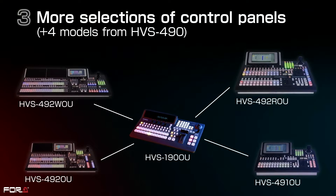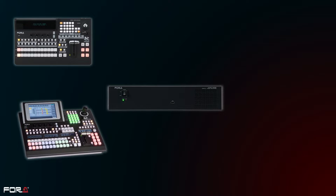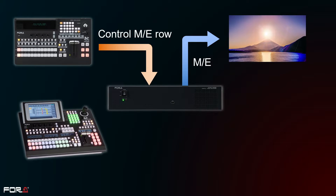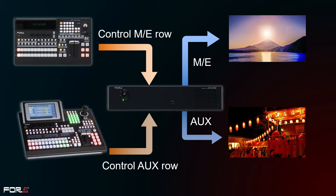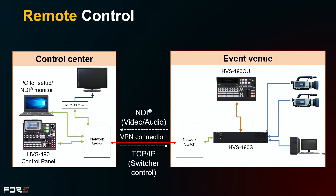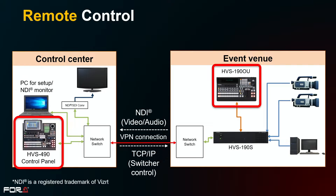Up to two HVS 490 series operation panels can be connected to the HVS 190 series. By using multiple panels, the first panel can control M/E and the second panel can control the auxiliary line. By actively using auxiliary in addition to the main line system, the range of production can be expanded, making it ideal for event operations. It is also possible to place panels at both the event site and the control center.